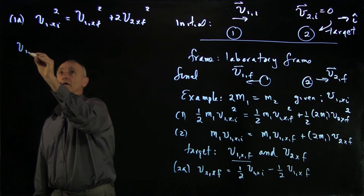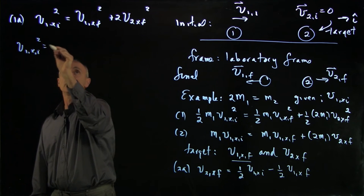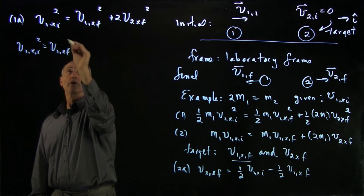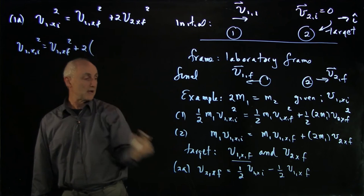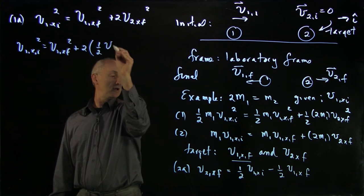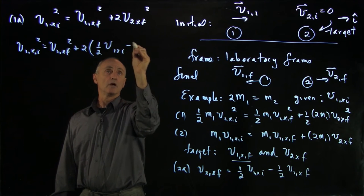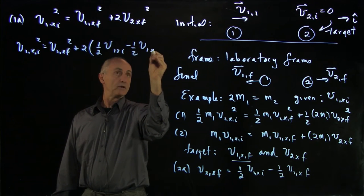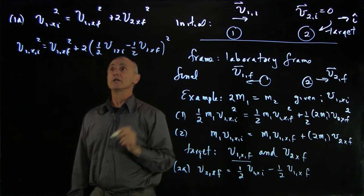Here's our momentum equation. If we substitute this in and square it, we can now substitute. We get v1x initial squared equals v1x final squared plus 2. Now we make our substitution. That's 1/2 v1x initial minus 1/2 v1x final quantity squared.